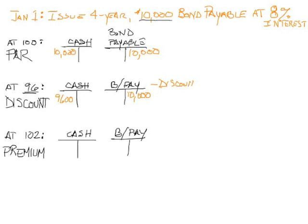Discount on bonds payable is a contra liability account — remember contra asset accounts like accumulated depreciation? Well, bonds payable is a liability, so this is a contra liability account that goes with bonds payable, and the discount goes there. I will have to debit the discount for the difference, and now I'm in balance. That's how it's recorded at the issue date.